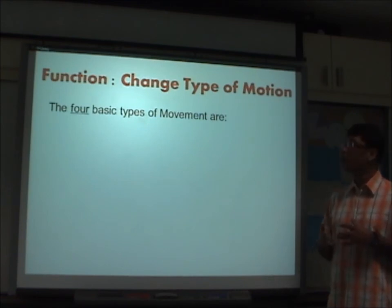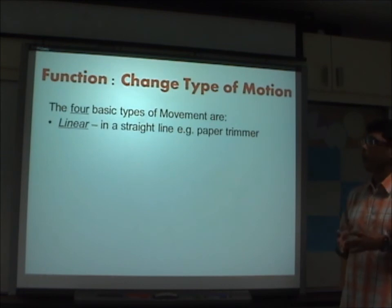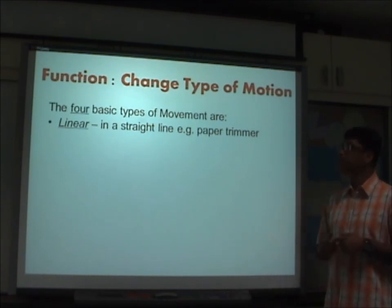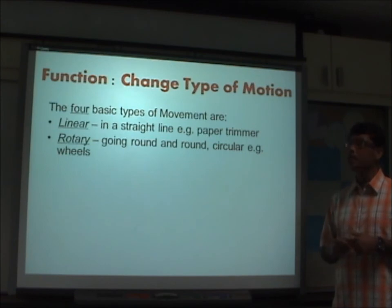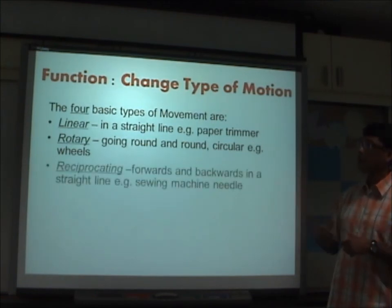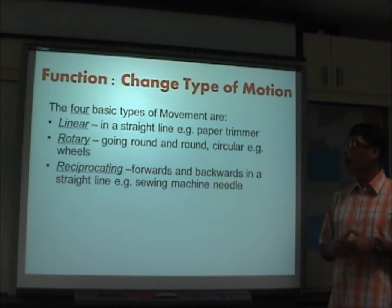To understand further about the change of type of motion, there are four basic types of movement that a mechanism can provide. The first type of motion is linear — movement in a straight line. Another type is rotary — rotation going round and round, sometimes called circular motion, for example with wheels. The next motion is reciprocating — forwards and backwards in a straight line, like a sewing machine needle going up and down.